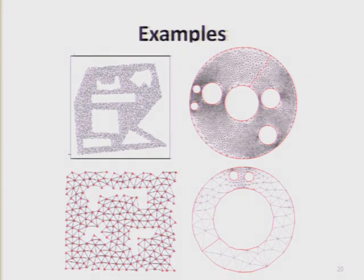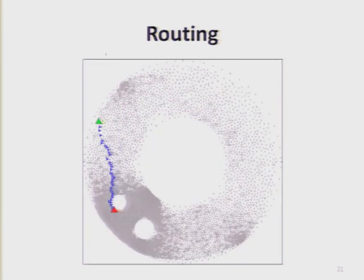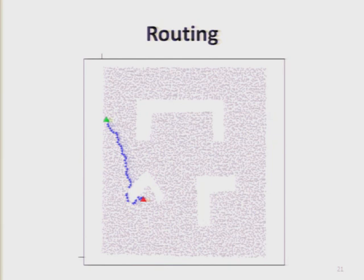Here are some examples. The top is a network with a number of holes, and we map it to an embedding where the holes are circular. This is another case with landmark-based triangulation — again, we map all the holes to be circular. Now, let's see how routing works in this network. The routing in the original coordinates gets stuck at a node on the boundary where all neighbors are further away and the message cannot be delivered. But in the virtual coordinate space, the message successfully gets around the hole and arrives at the destination. If we map this back to the true location, you can see the routing path actually gets around the hole automatically.